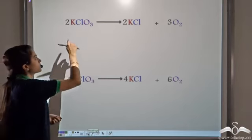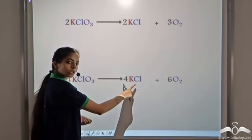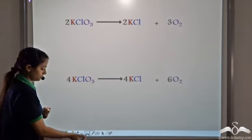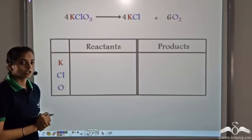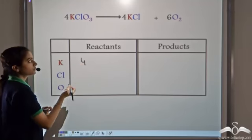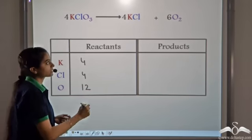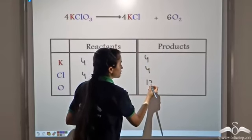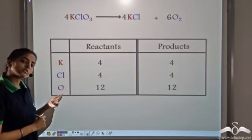Now let's double the number of molecules. If we double the coefficients, we get 4 molecules of KClO₃ giving 4 molecules of KCl plus 6 molecules of Oxygen. Let's count the atoms: we have 4 atoms of Potassium, 4 atoms of Chlorine, and 12 atoms of Oxygen on the reactant side. On the product side, 4 atoms of Potassium, 4 atoms of Chlorine, and 12 atoms of Oxygen. Even this is a balanced equation — all species are balanced.